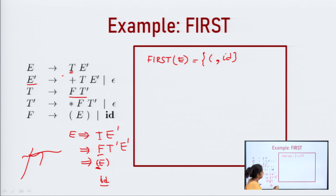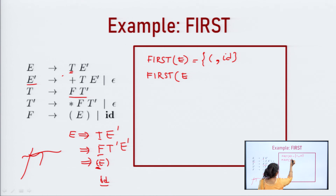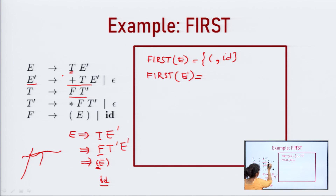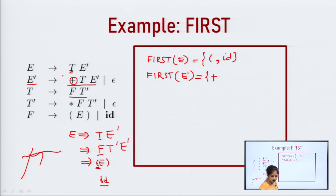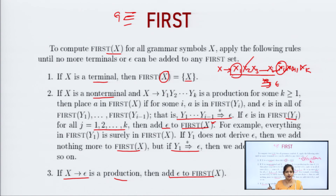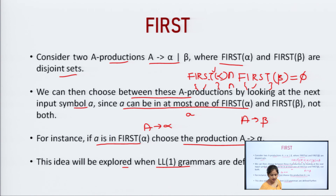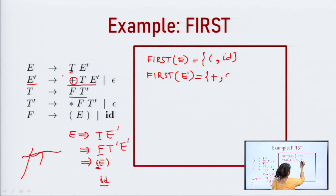Now we will obtain FIRST(E'). Looking at the alternates one by one: the first production is E' → '+' T E', and we obtain FIRST of this. Since '+' is a terminal symbol, we directly write '+'. Next, E' → ε, and according to the third rule — if the production is X → ε, then epsilon is added to FIRST(X). So here we add epsilon. Therefore, FIRST(E') = { '+', ε }.